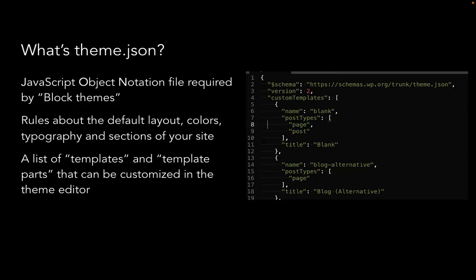What I know about theme.json is that it defines the overall default layout of your website — including what sections are in it, what colors, what typefaces, what the spacing units are, and what templates you want to use. If you've ever created a custom page template with a sidebar or three columns — that's now done in your JSON file. Similarly, header.php, footer.php, and sidebar.php files are now template parts defined in theme.json.